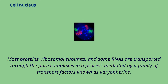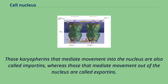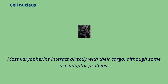Most proteins, ribosomal subunits, and some RNAs are transported through the pore complexes in a process mediated by a family of transport factors known as karyopherins. Those karyopherins that mediate movement into the nucleus are called importins, whereas those that mediate movement out of the nucleus are called exportins. Most karyopherins interact directly with their cargo, although some use adapter proteins.